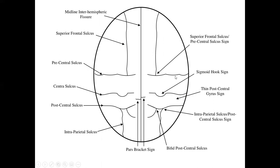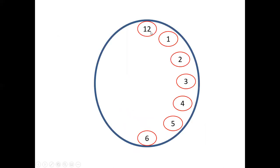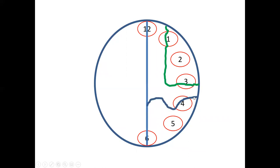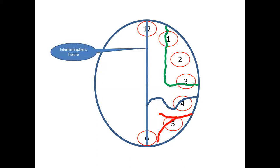The area between the precentral sulcus and central sulcus is thicker compared to the posterior central areas. So to summarize: the interhemispheric sulcus separates the two hemispheres; the superior frontal sulcus runs from 1 to 3; then the precentral sulcus; then the hook sign — the central sulcus; then the postcentral sulcus; and finally the intraparietal sulcus. You can remember these according to the wall clock positions.